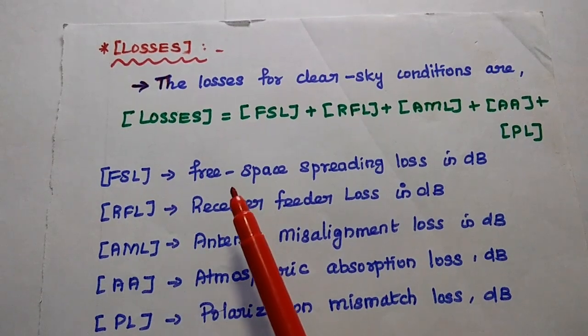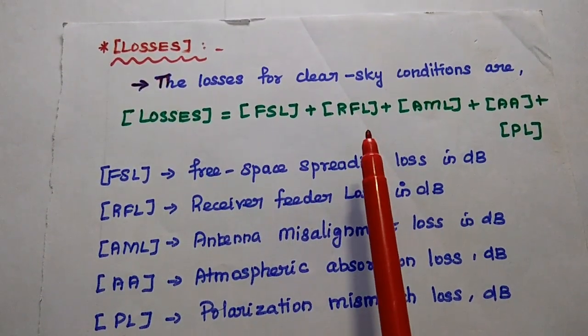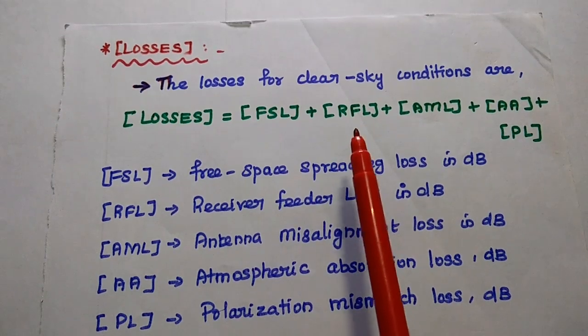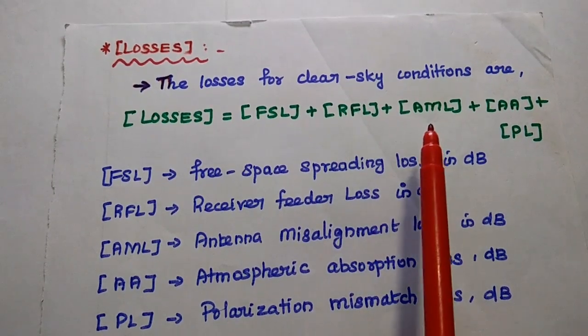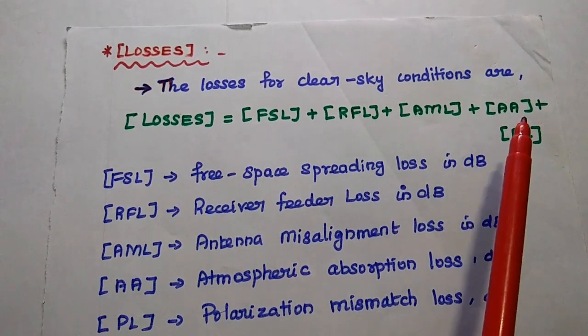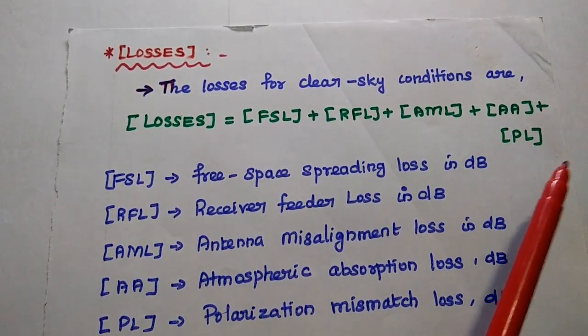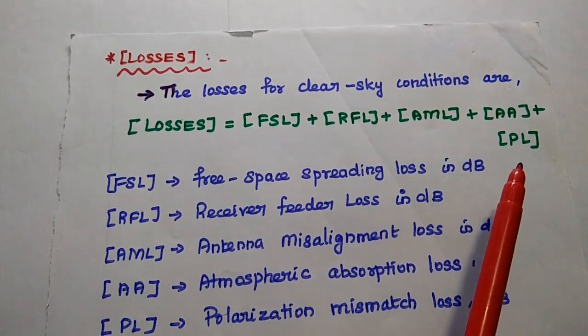Here FSL means free space spreading loss in dB. RFL means receiver feeder loss. AML means antenna misalignment loss. AA means atmospheric absorption loss. PL means polarization mismatch loss.